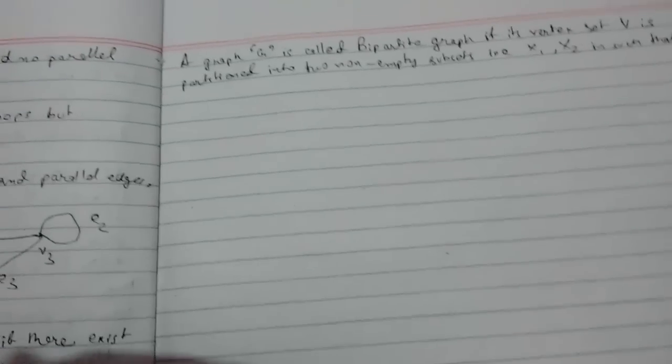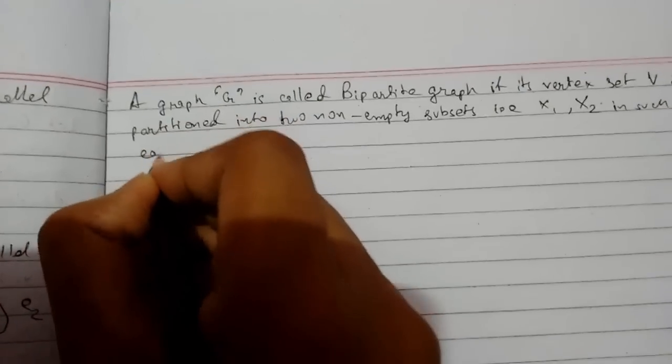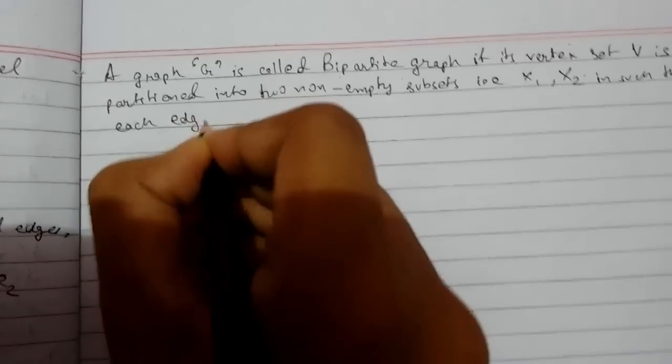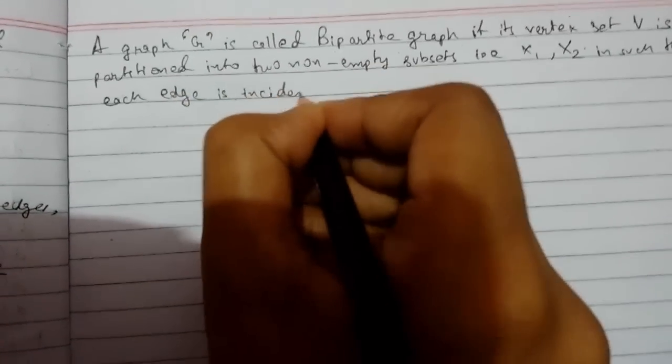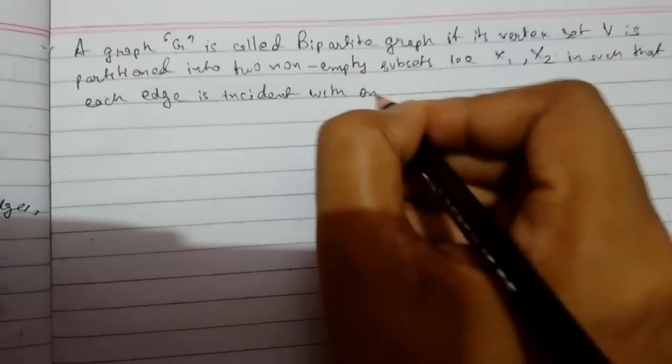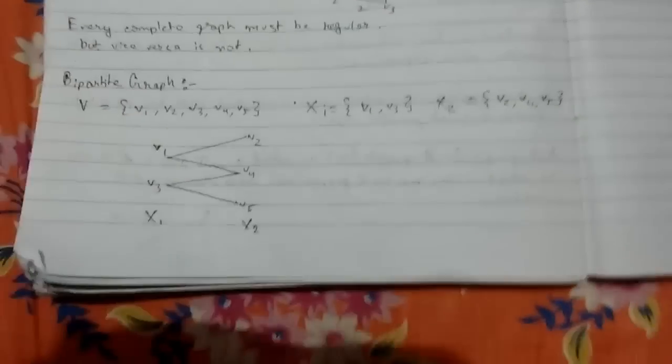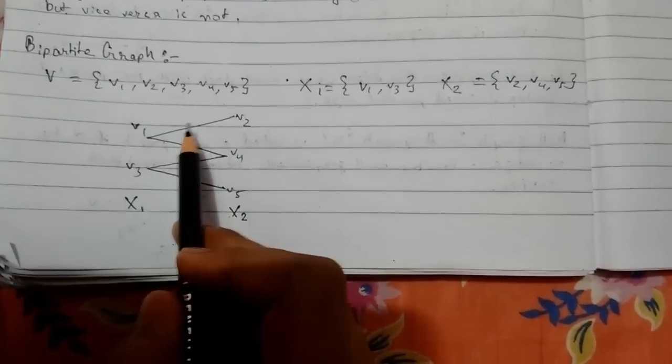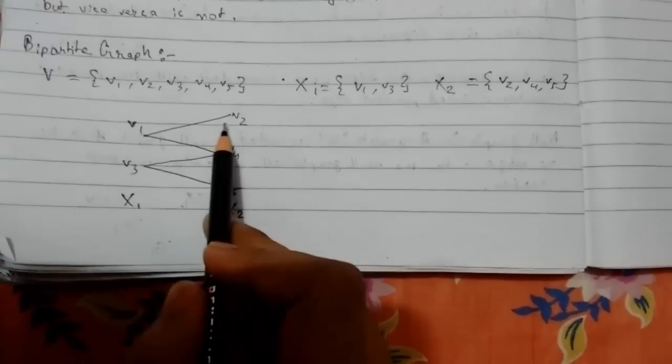Such that each edge is incident with one vertex from x1 and another from x2. This is the definition. It says that each edge must be incident from x1 and x2.